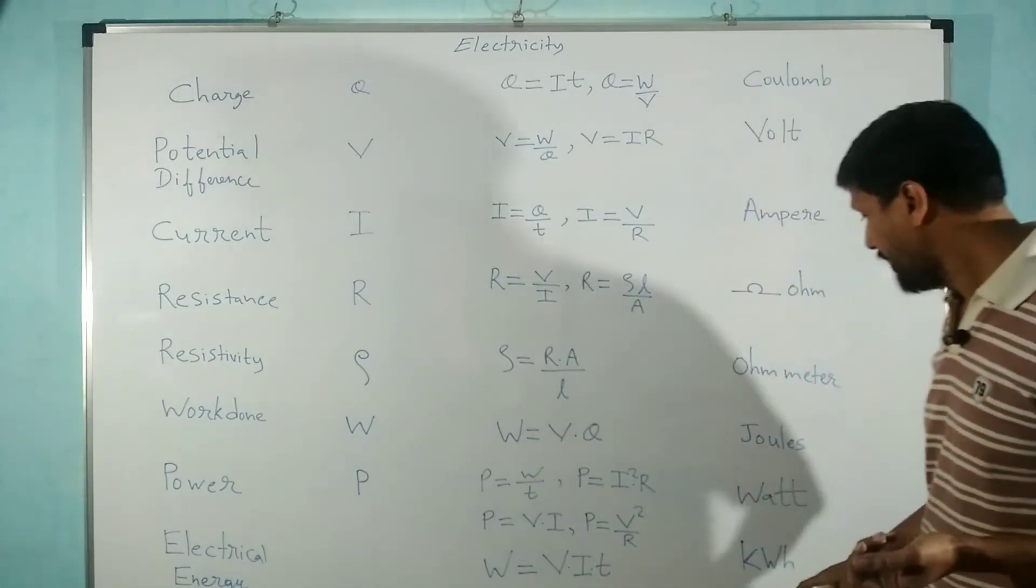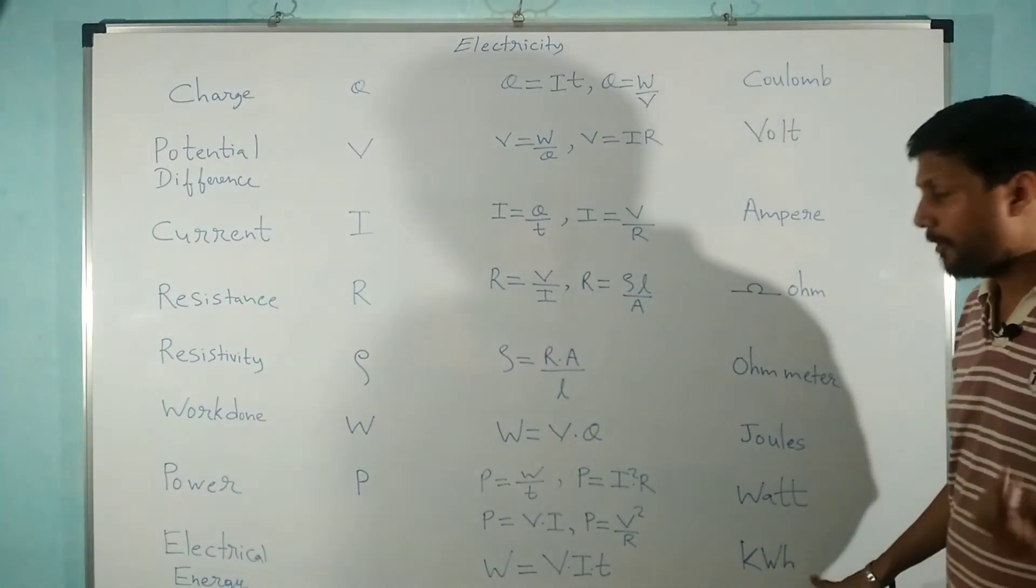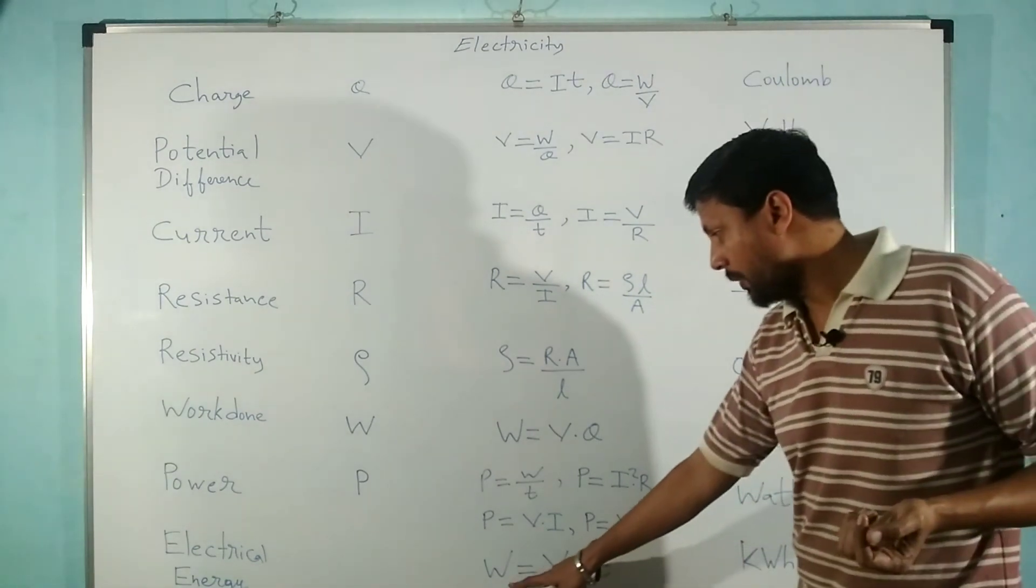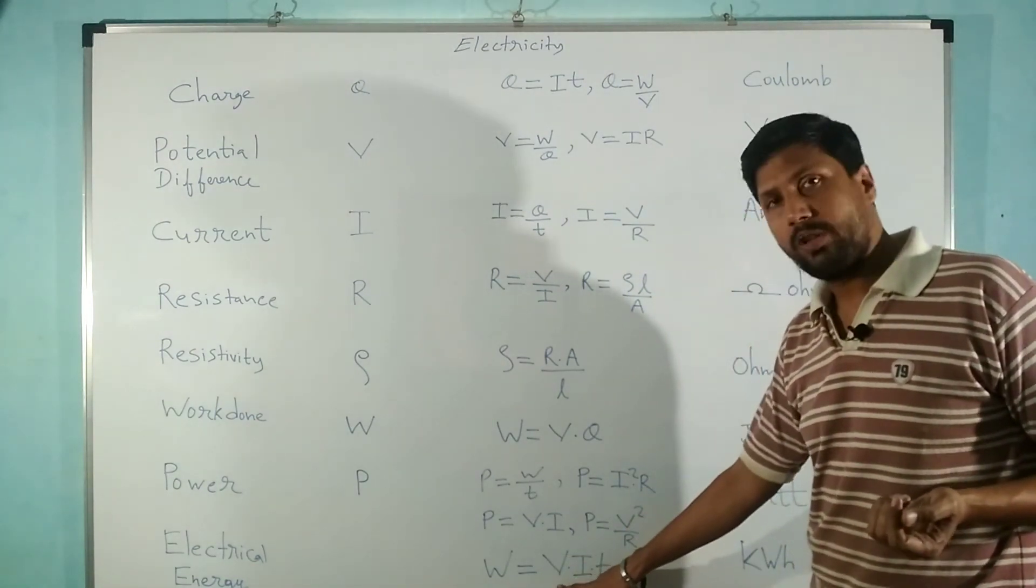The formula for electrical energy is work done equals voltage times current times time.